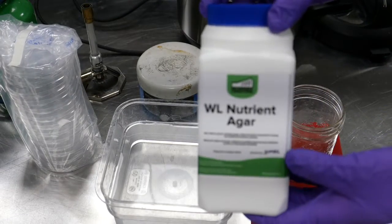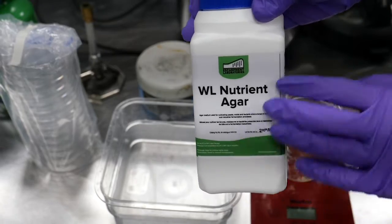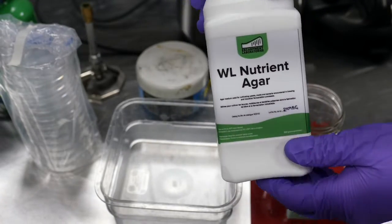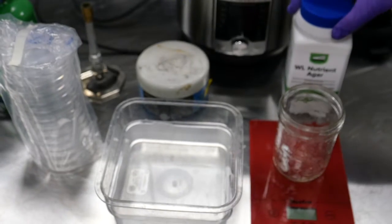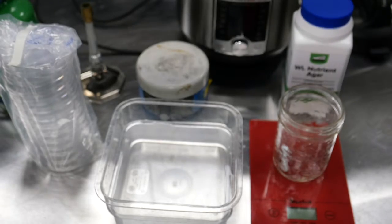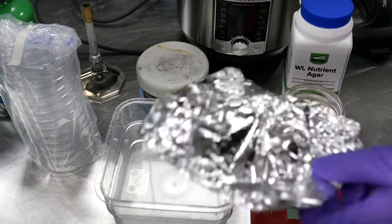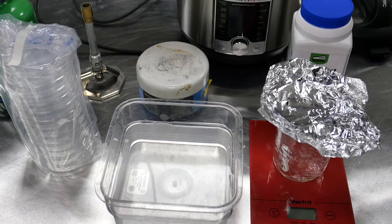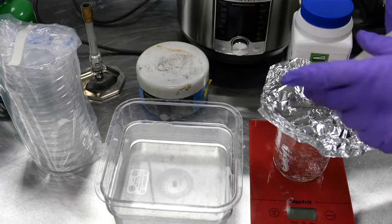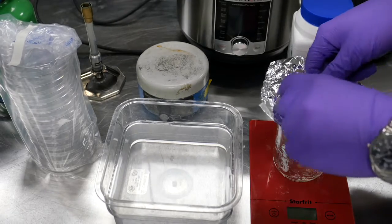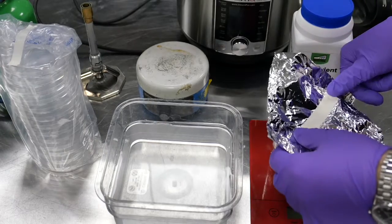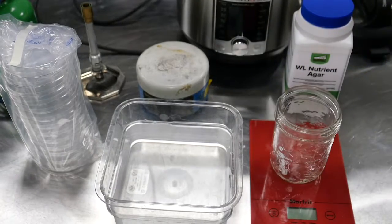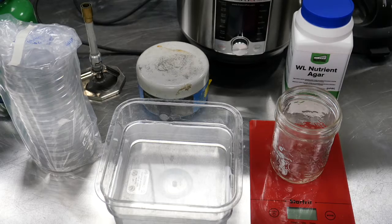You of course need your agar medium as well, so this is all pre-mixed. It comes with instructions, everything ready to go. And then if you like, you can also have some foil and autoclave indicator tape that will turn dark when it's been heated and pressurized. That's all it takes, so let's get into it.